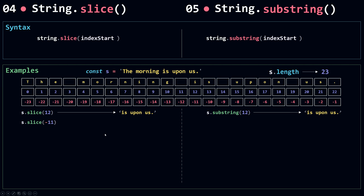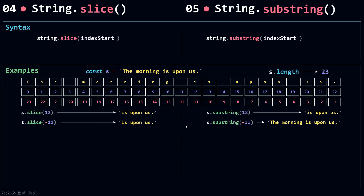Now let's look at passing a negative number for the index start. For slice, minus 11 counts from the end, so it starts from the same position as index 12 and returns the same result. But for substring, when the index start is a negative number, it behaves like zero — so any negative number is treated as zero, and it returns the whole string.